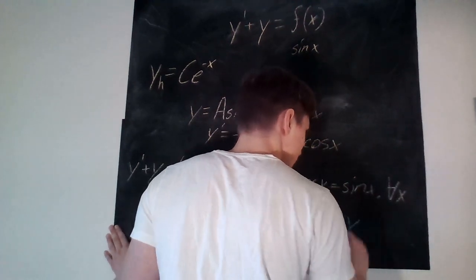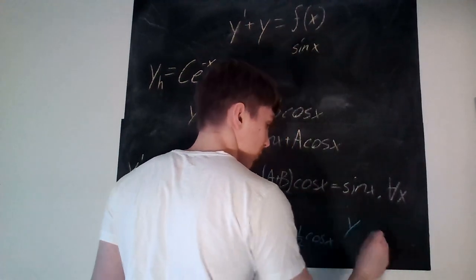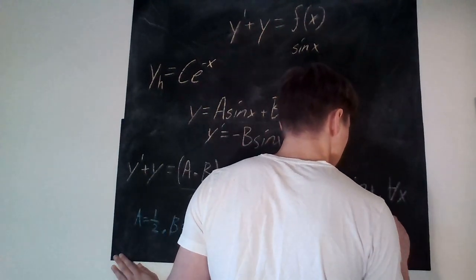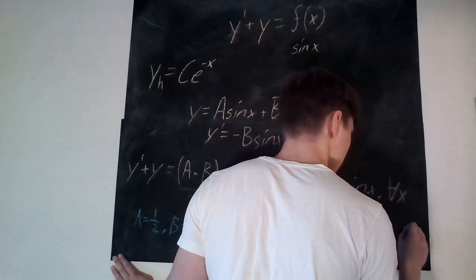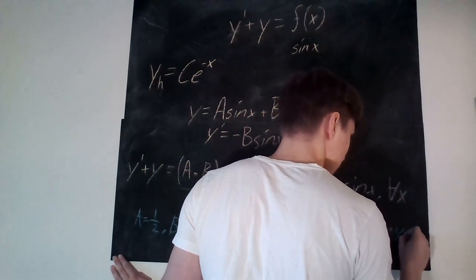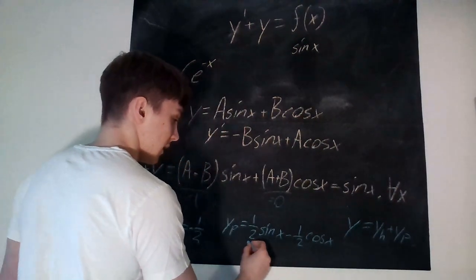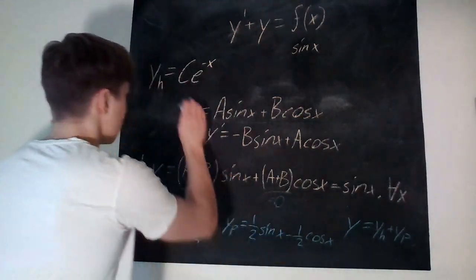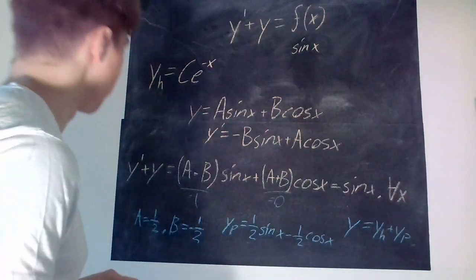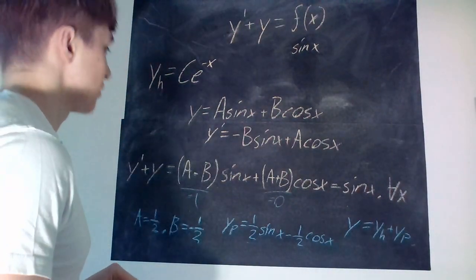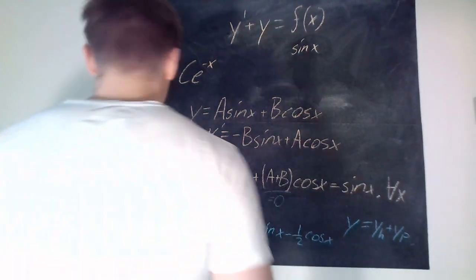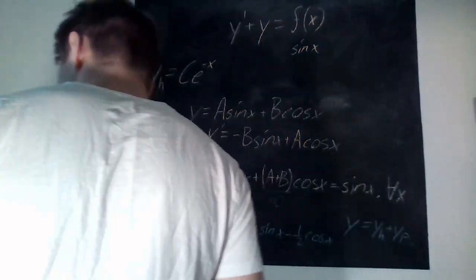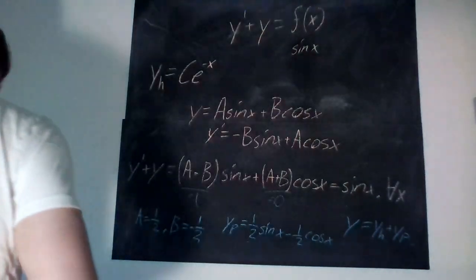Our total solution will be our homogeneous solution plus our particular solution — just those two added together. So that was the second part of question number four.